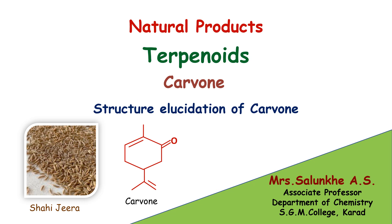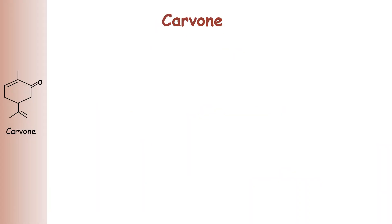Welcome. In this video we are going to learn structure elucidation of carvone, that is structure determination of carvone, which is an important terpenoid present in caraway seeds (shahi jeera) and spearmint oil (pudina). First we see the introduction.